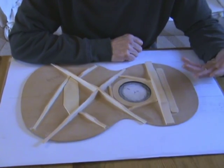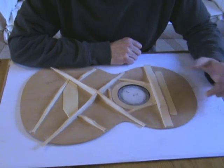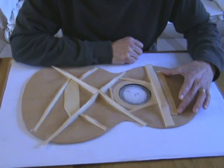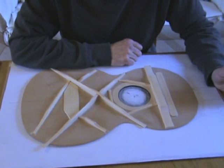So this kind of long, flat brace is really just offering some stability to that area where the fingerboard is glued.